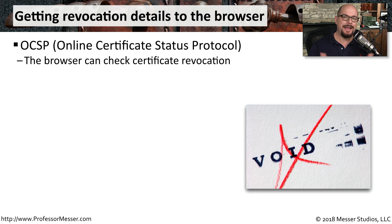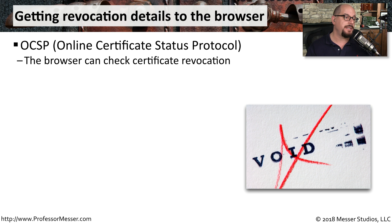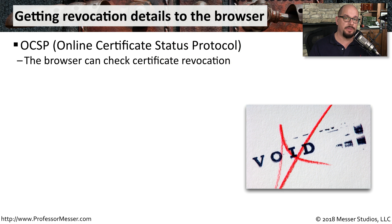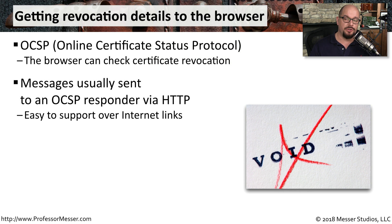Now that the certificate authority has this list of revoked certificates, there needs to be a way for the browser to recognize that these have indeed been revoked. For that, we use OCSP, or Online Certificate Status Protocol. This is what the browser uses to check the status of a particular certificate. These are usually sent via HTTP, since that is the normal protocol used for a web browser.